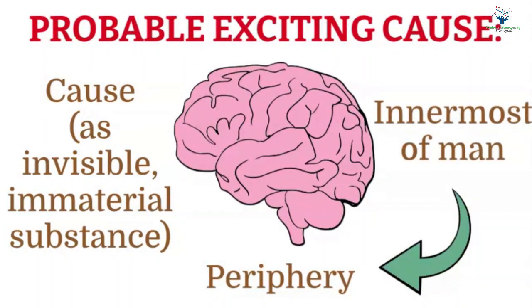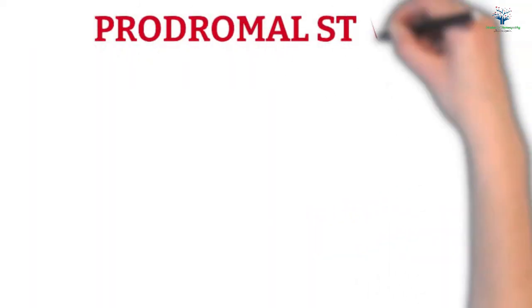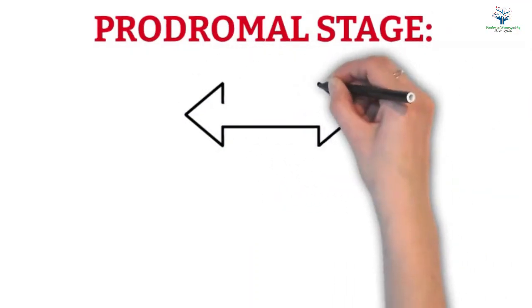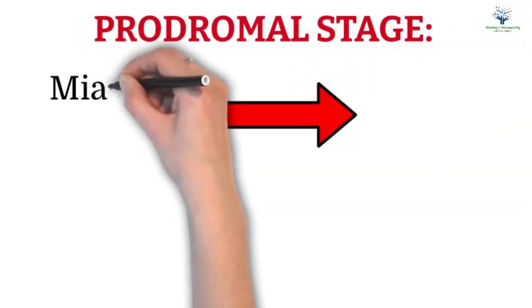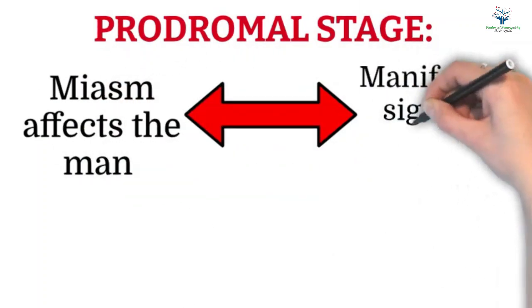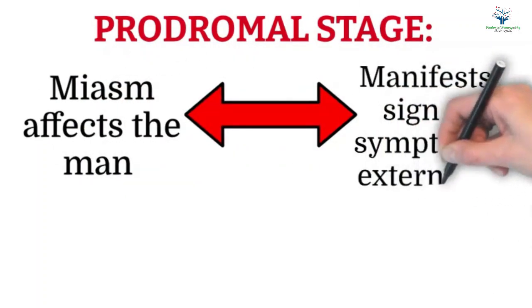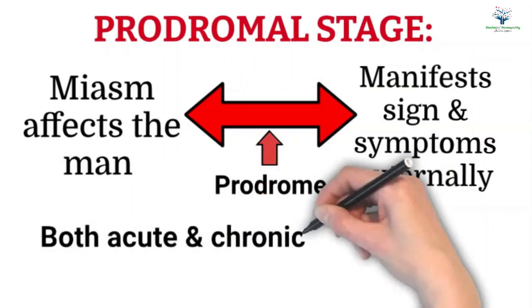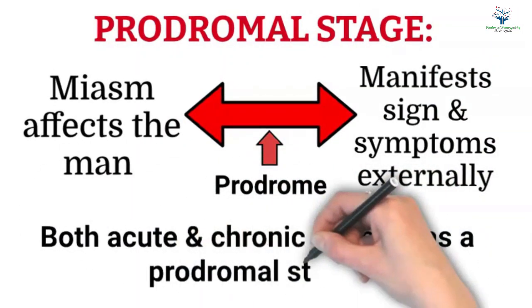Next coming to another important point Kent has mentioned in this chapter, that is prodromal stage. The prodromal stage is the period between the cause affecting the man and the appearance of the external manifestation of signs and symptoms. Both acute and chronic miasms have a prodromal stage.